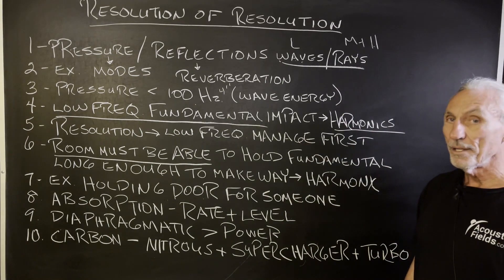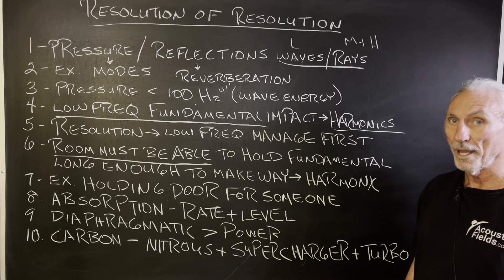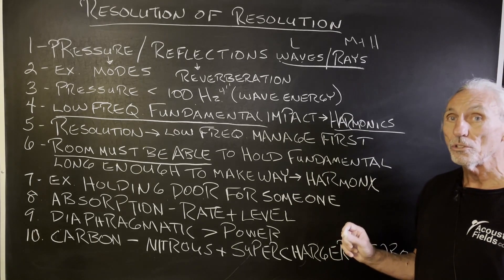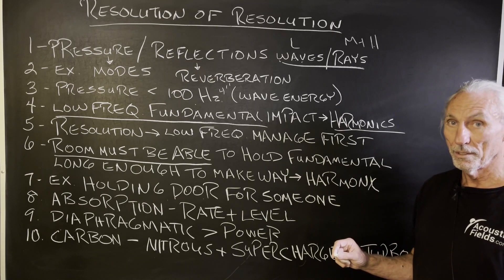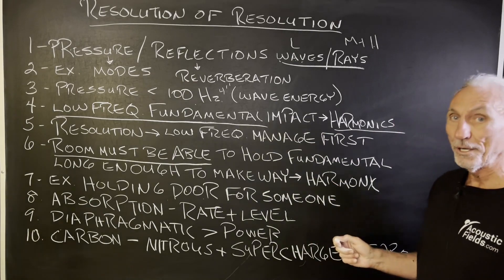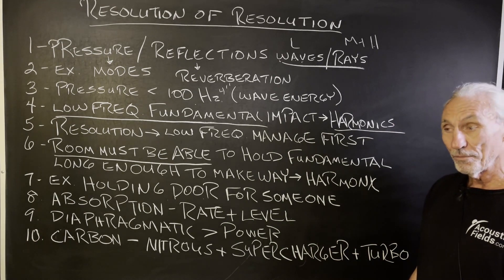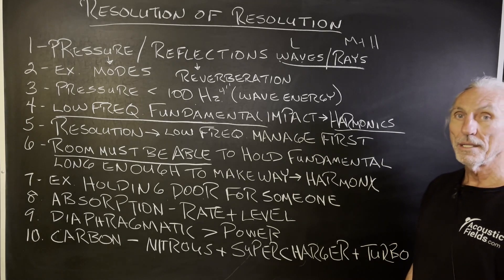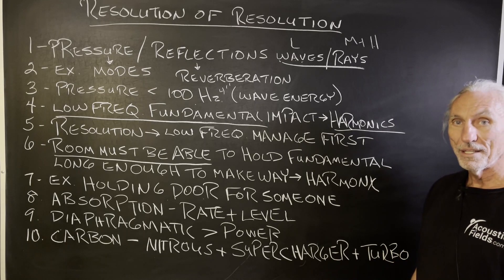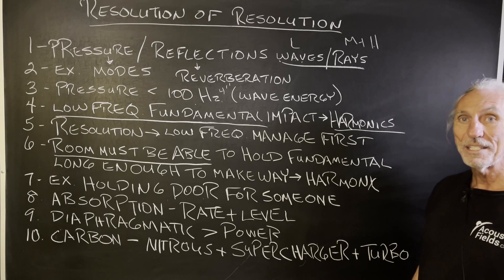Absorption is the only way for low frequency. I hear this low frequency diffusion stuff all the time — it's nonsense. Low frequency energy is managed through absorption. That's it. You're not going to diffuse your way out of room modes. Diaphragmatic absorption is the most powerful, bar none. Membrane and Helmholtz: Helmholtz is frequency specific, not good rates, so you need a lot of them — they're okay for fine tuning. Membrane is the cousin to diaphragmatic, similar processes, just not enough rate. If you're going to take up all the space a membrane requires, go to diaphragmatic — it's the same amount of space and 10 times the horsepower.